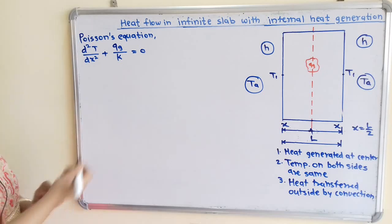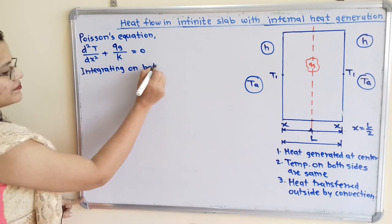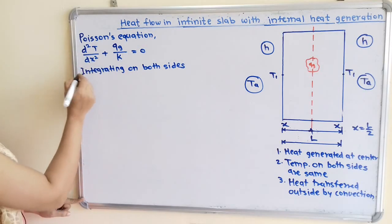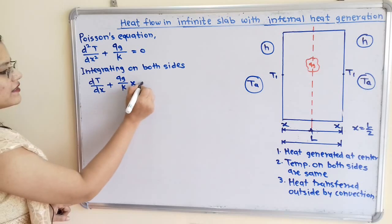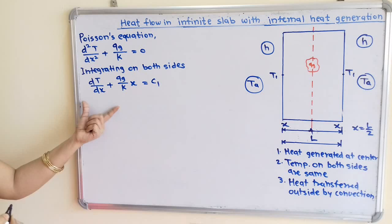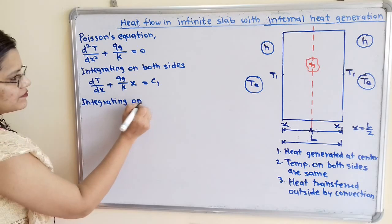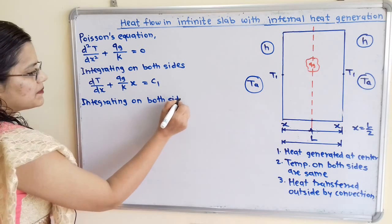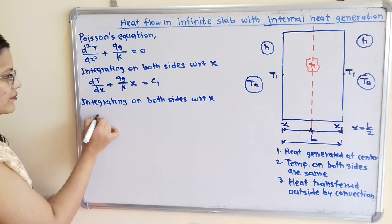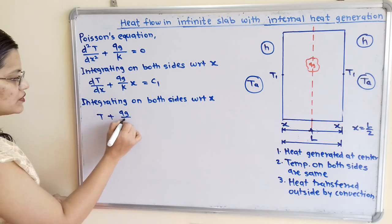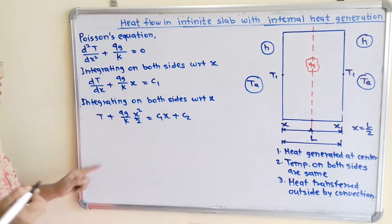We integrate both sides. The first integration gives: dT/dx + (QG/K)·x = C1, where C1 is the constant of integration. Integrating again on both sides with respect to x gives: T + (QG/K)·(x²/2) = C1·x + C2, where C1 and C2 are constants of integration. This is equation number 1.